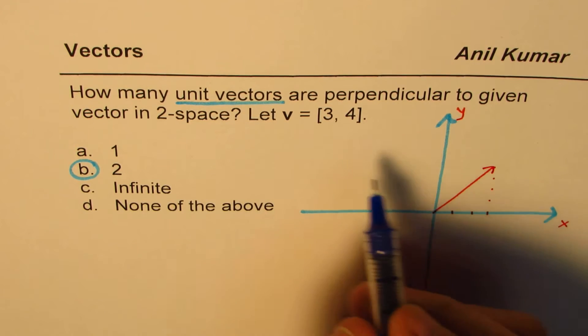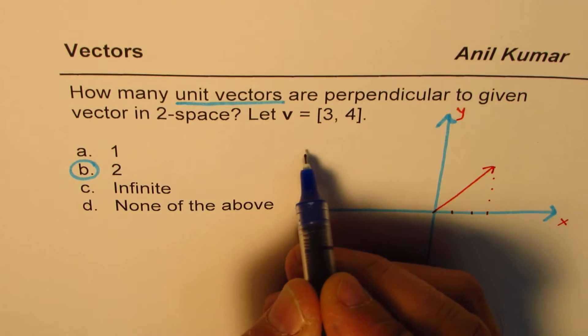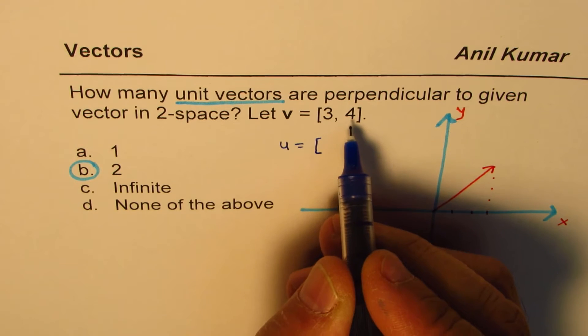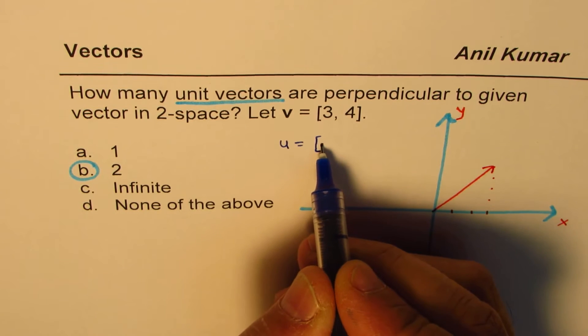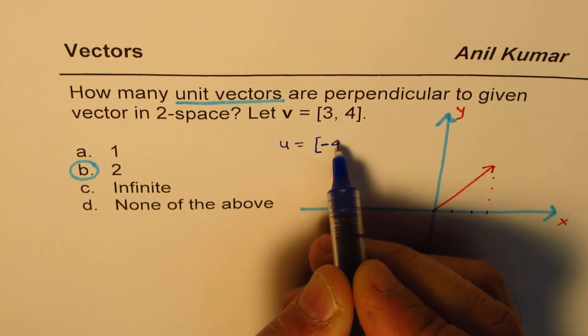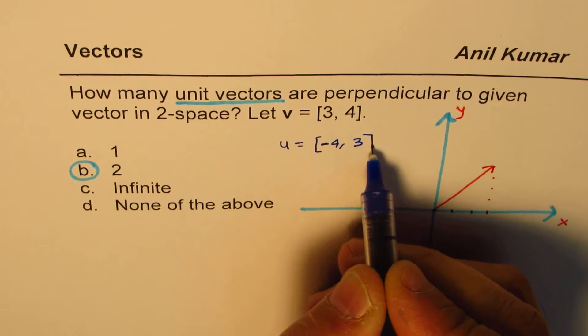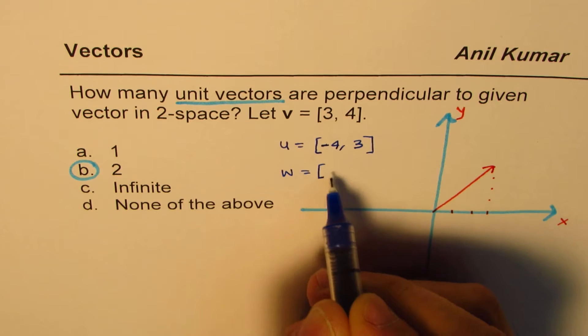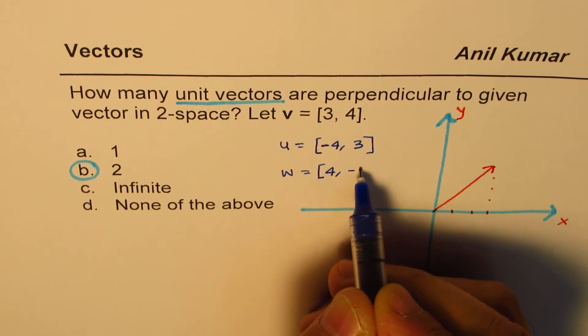We could say that the vector which is perpendicular to this, maybe u, will be—we have to swap this and change one of the signs. So it could be [-4, 3]. Or let's say w, which could be [4, -3].